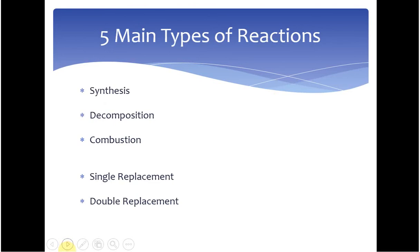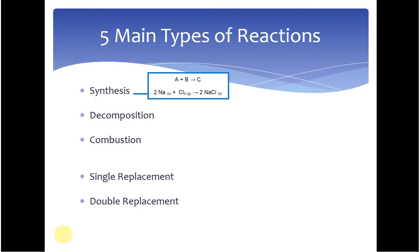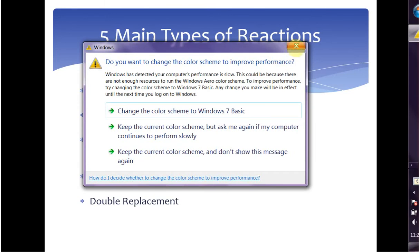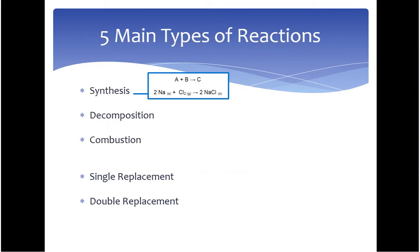Now let's go into the five main types of reactions. The first is synthesis. For synthesis you have two specific reactants that you react to make one product. Here we have sodium and chlorine — two different things making one product. For the most part these are elements, but occasionally one of the reactants could be a compound as well.